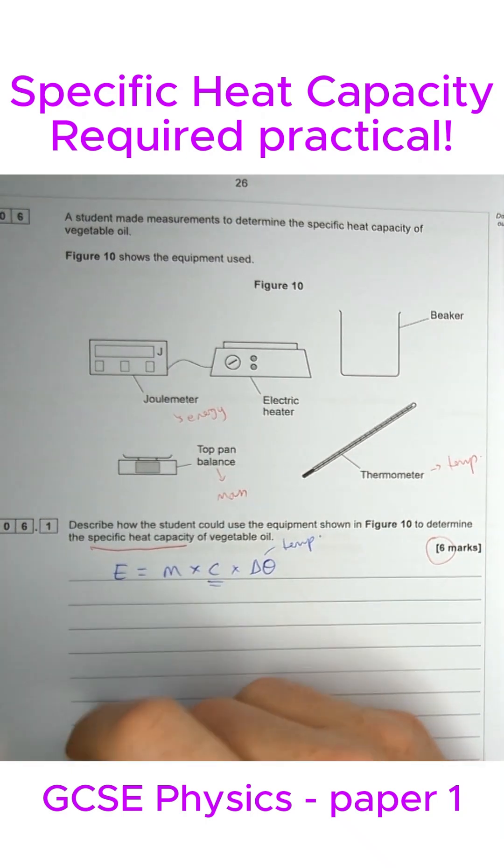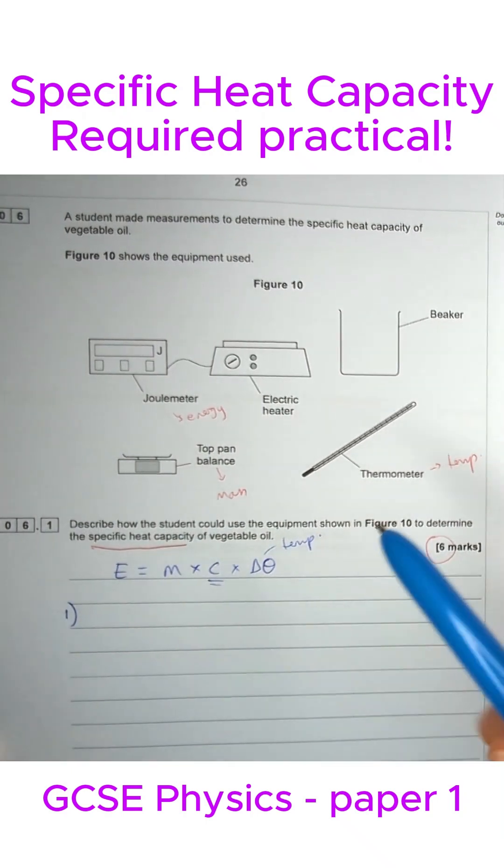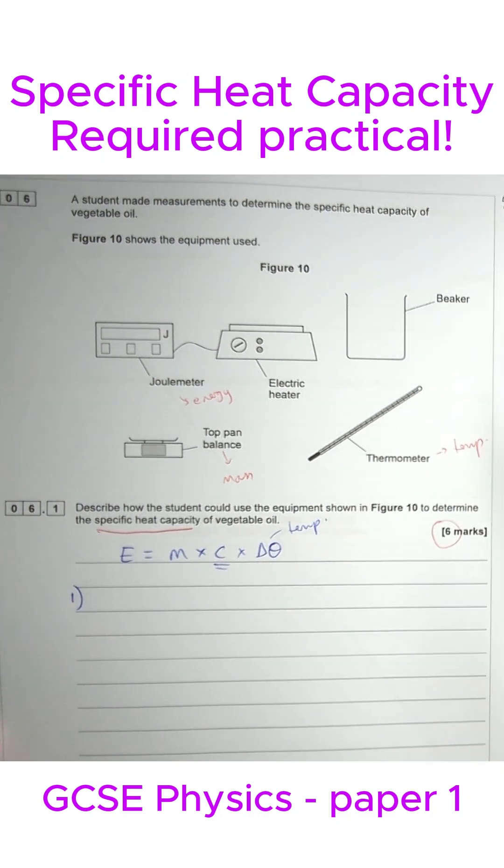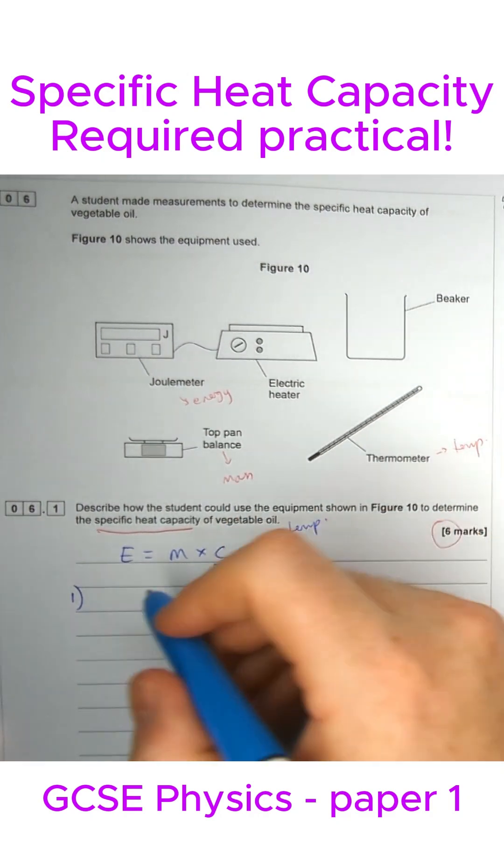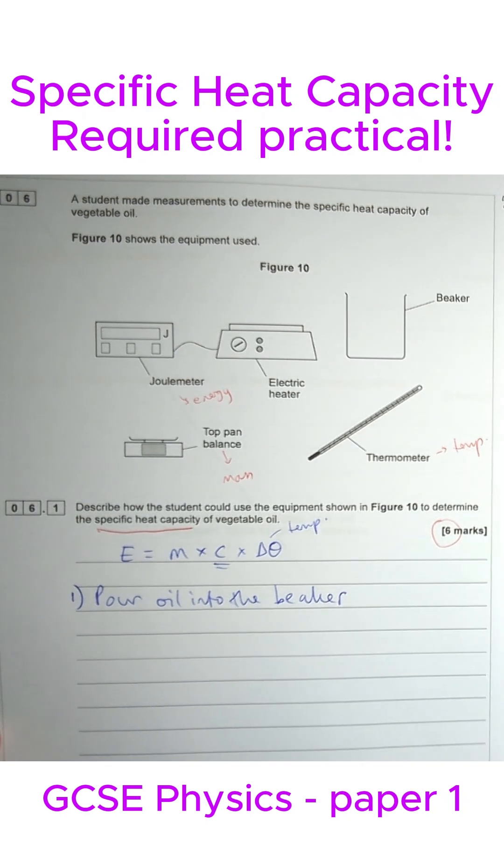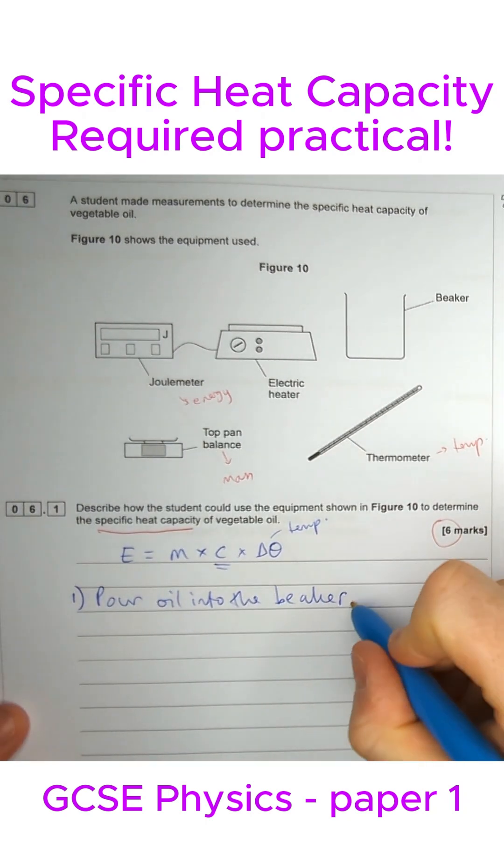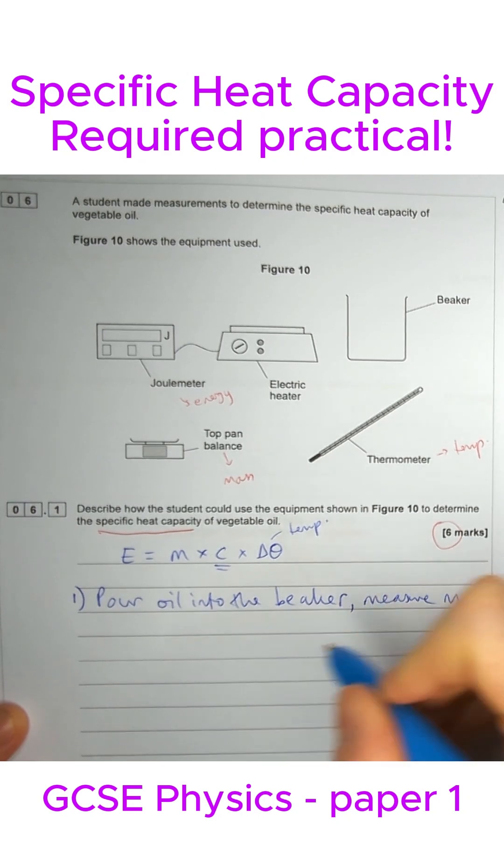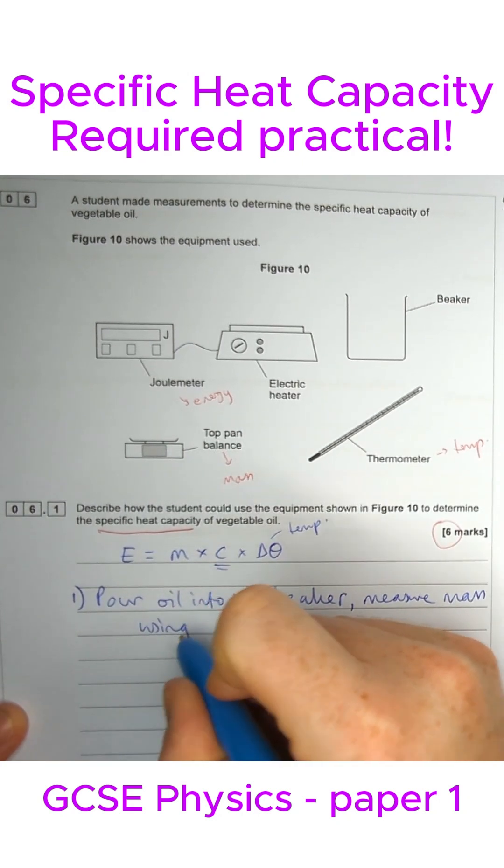Let's start writing a method. We can use bullet points to make our lives easier. You do get marks for talking about how you set this all up. First things first, we're going to pour the oil into the beaker. The easiest thing to do first is to measure the mass using the top pan balance.